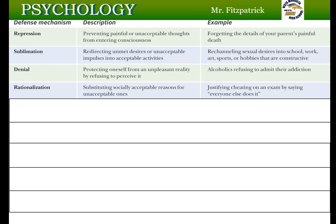Rationalization is when you substitute socially acceptable reasons for unacceptable behavior. You might cheat on a test and say, 'It's okay, everybody does it.' Or you're speeding and tell the officer, 'But everybody was speeding.' Or someone who hit their girlfriend says, 'Well, at least I didn't break her arm.' You're trying to justify the behavior — giving a socially acceptable excuse for something that really is wrong.